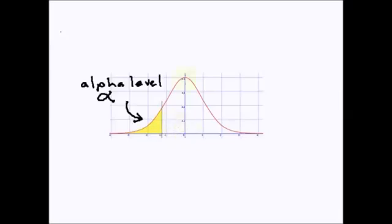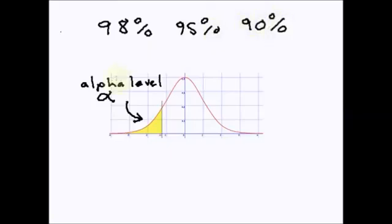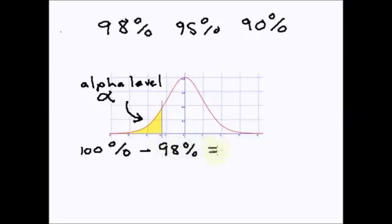Confidence levels are usually 98%, 95%, or 90%. To calculate the alpha level, you start with 100% and subtract your confidence level. For example, a confidence level of 98%: subtract that from 100% and you get 2%, which is your alpha level.